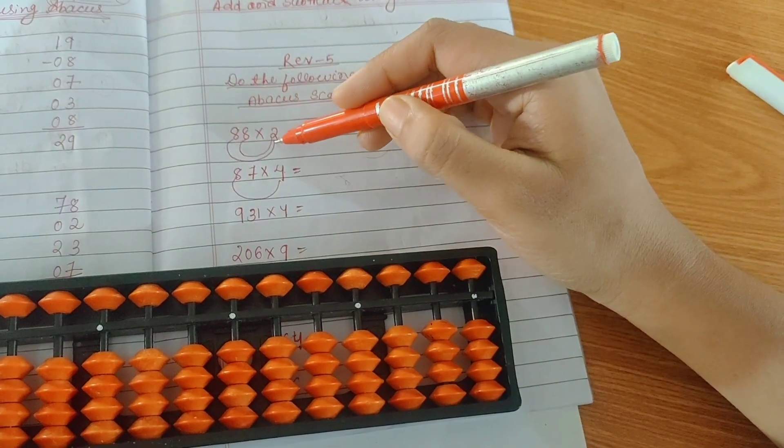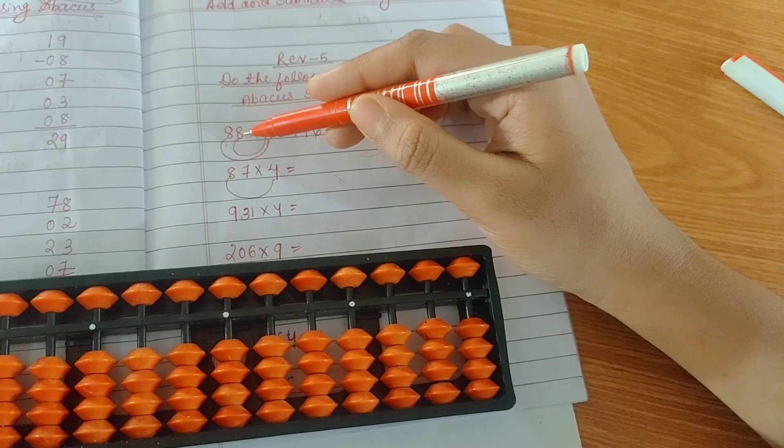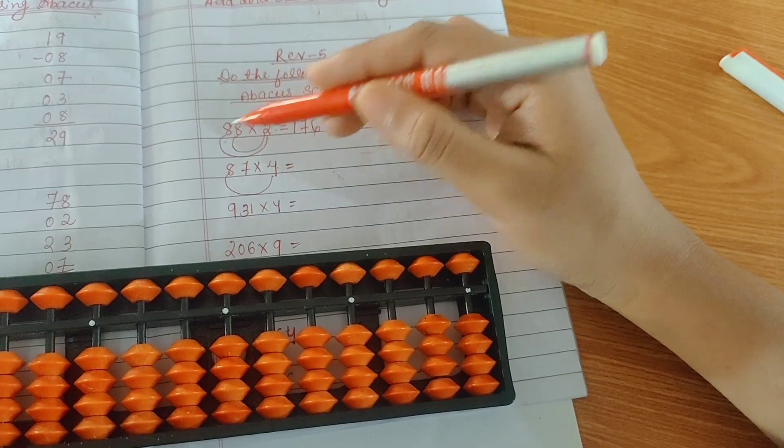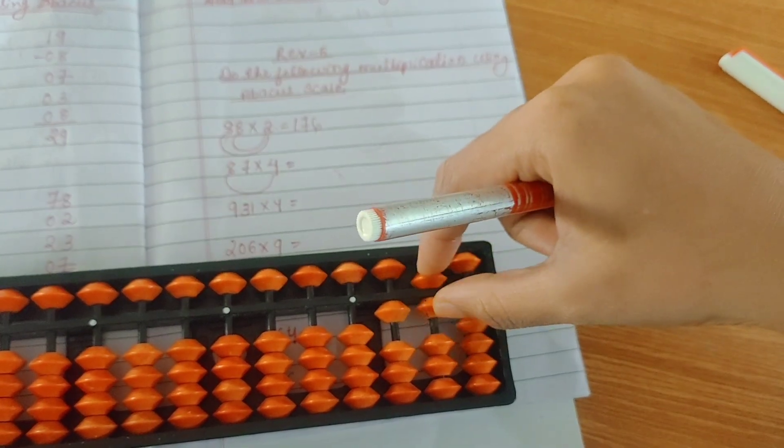First, you will multiply 2 with the first number, then you will multiply 2 with the second number. So first, 2 times 8 is 16. Start the answer from third row: 1, 6, 16.